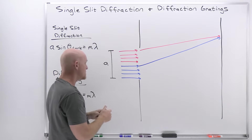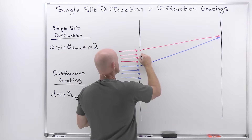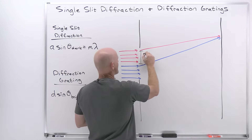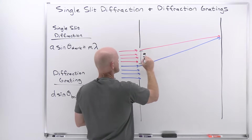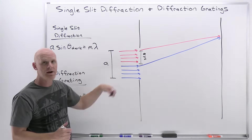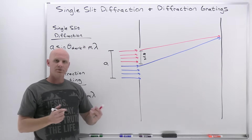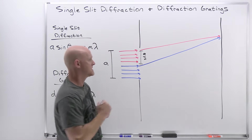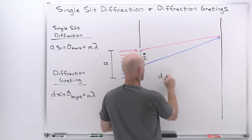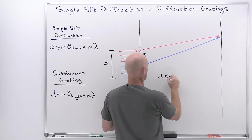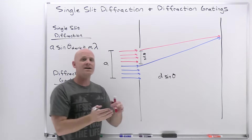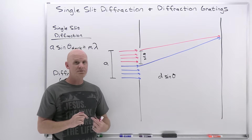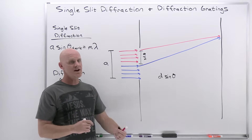By doing that, the distance from where these light rays originate at the slit is a distance of A over 2 for any of the pairs we look at. Recall from Young's double-slit interference that the path difference was D sine theta, where D was defined as the distance between the slits — the distance between where the light rays were originating.